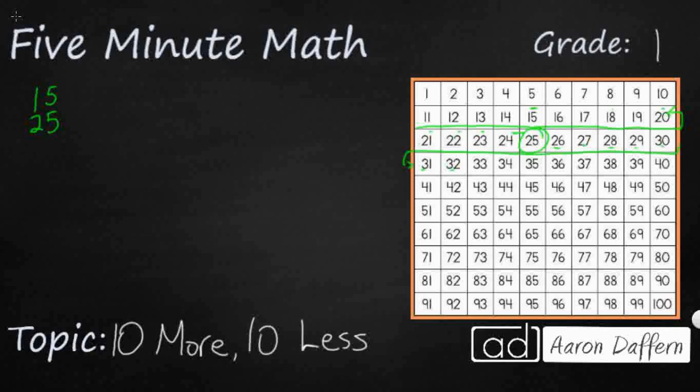6, 7, 8, 9, 10. So 10 more than 25 is 35.